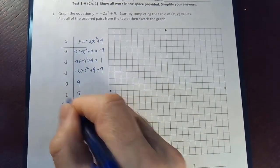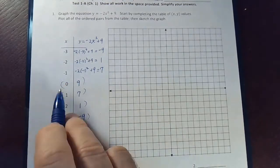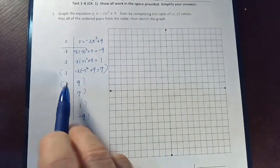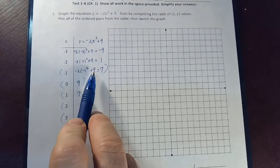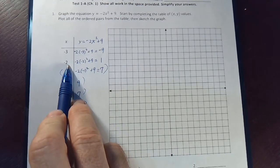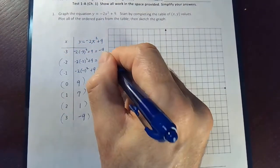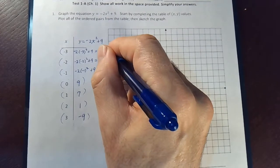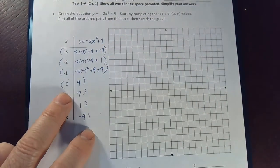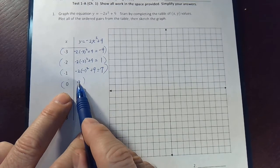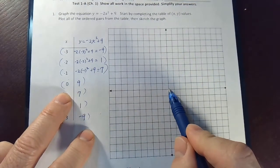So you can think of all these as simply ordered pairs. I guess I could put parentheses around it. But this means negative 1 comma 7, this is negative 2 comma 1, negative 3 comma negative 9. So I think I'll start in the center. 0 comma 9, which here is the origin.